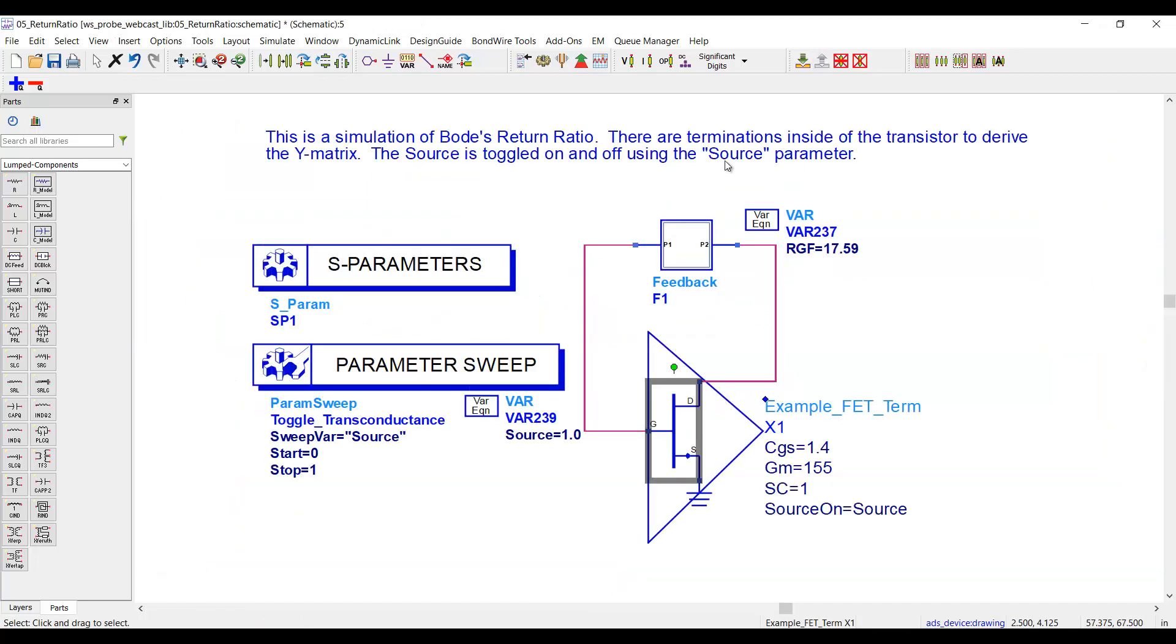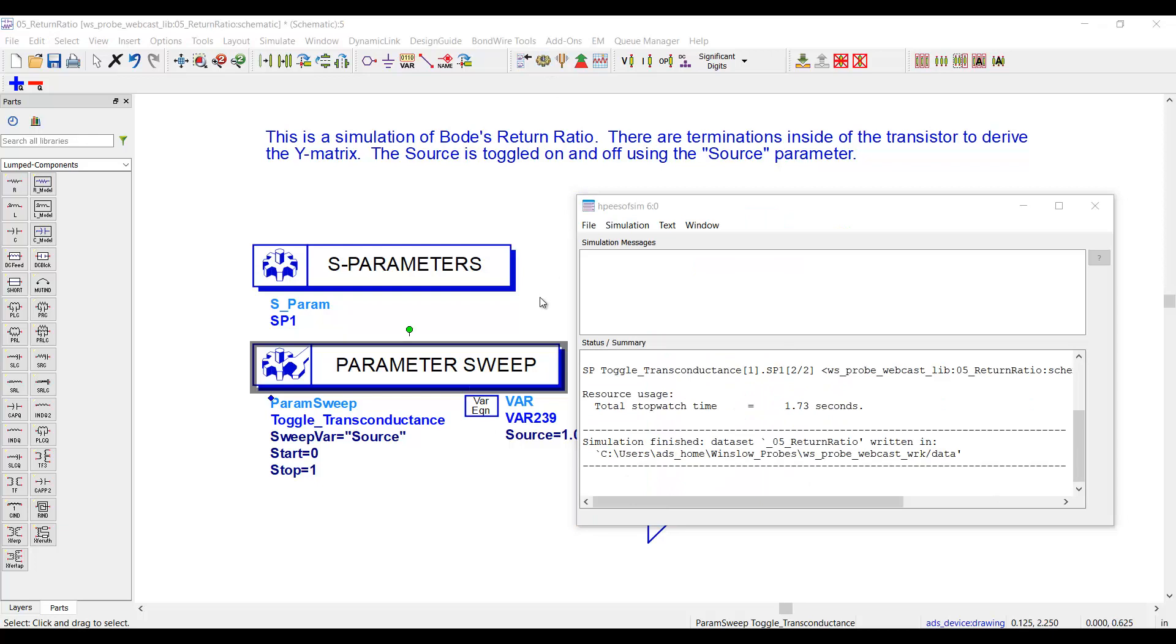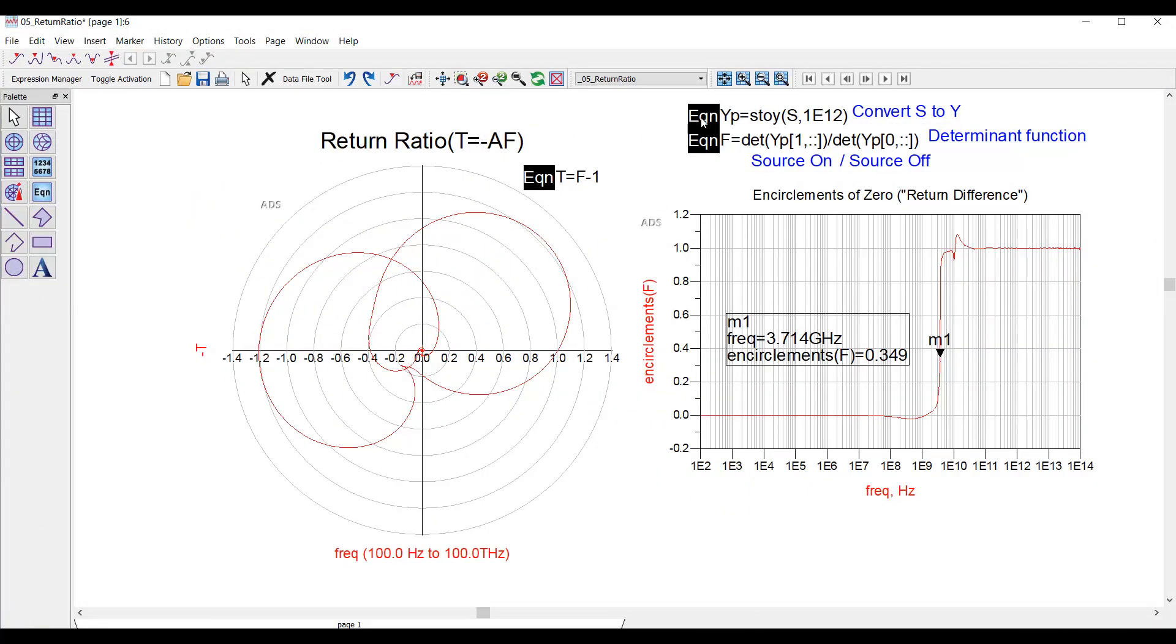I'll go back to the top, and I'm going to run an S-parameter simulation. And it actually toggles that source on and off by using a sweep control. In the data display, the first thing I do is take that four port S matrix, and I convert it to Y parameters. And then I compute the Y matrix determinant for the on state, and then I divide it by the determinant for the off state. It's that easy. And I plot this, and I look for encirclements of one just as before, like we did with loop gain. And we finally know with this amplifier feedback network now, the right answer, which is that the circuit is unstable, because the return ratio does in fact circle one zero clockwise. That's like checking the answer key in the back of your textbook.